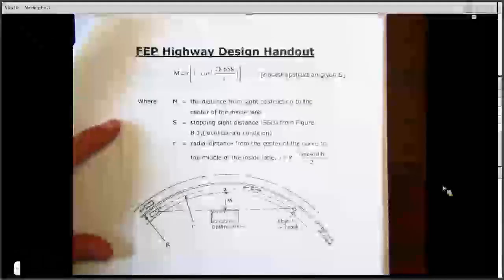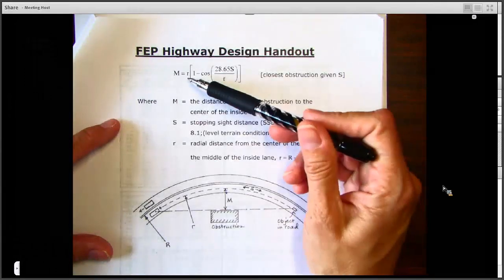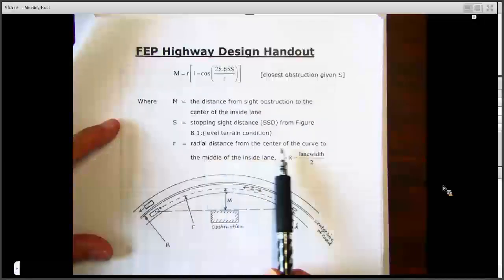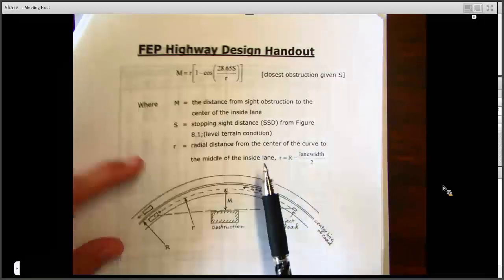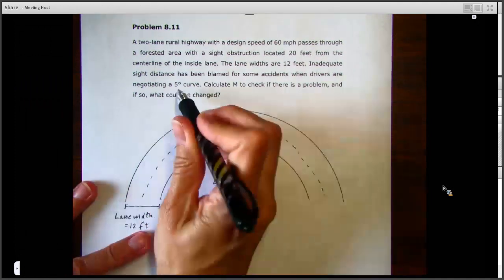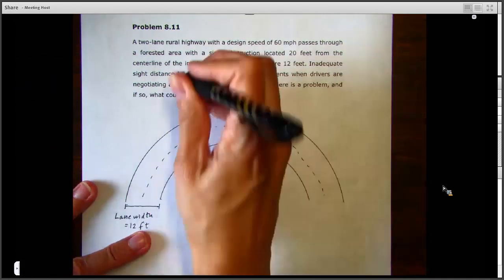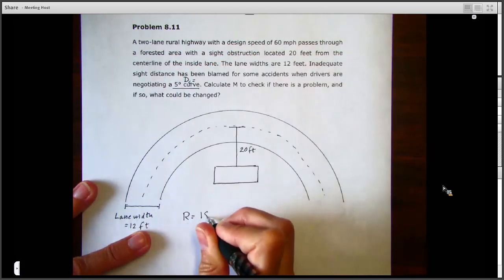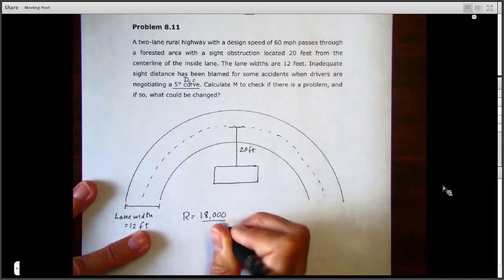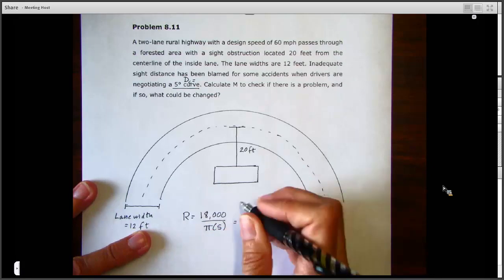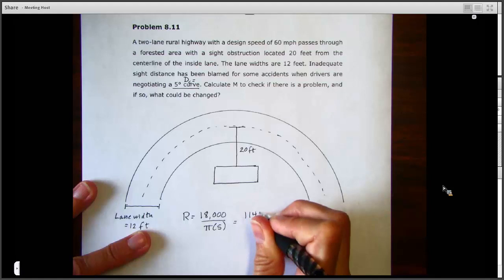In order to do that, we have to figure out our other variables. One of those is this lowercase r, which is the radial distance from the center of the curve to the middle of the inside lane. To figure that out, we need to find the radius of the entire curve. Luckily we're being told it is a five-degree curve, so we do know that's our degree of curvature. We can solve for the radius of the curve, taking 18,000 and dividing it by pi times that five degrees, and that gives us 1146 feet.